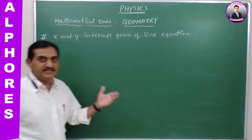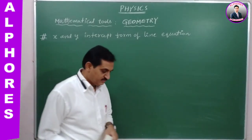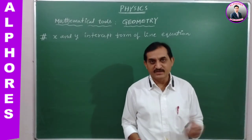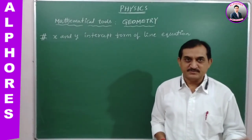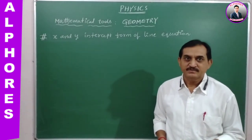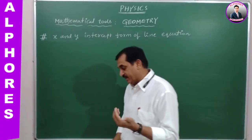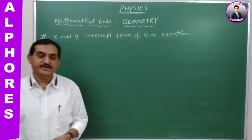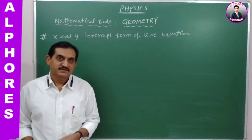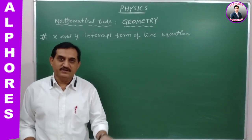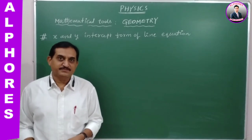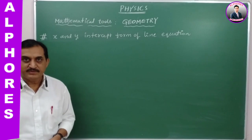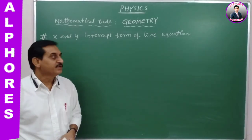So, we know the line equation only with Y intercept form. They are Y is equal to MX plus C, Y is equal to MX minus C, Y is equal to minus MX minus C — that is only in Y intercept form. We know those equations; we made exercises over it.